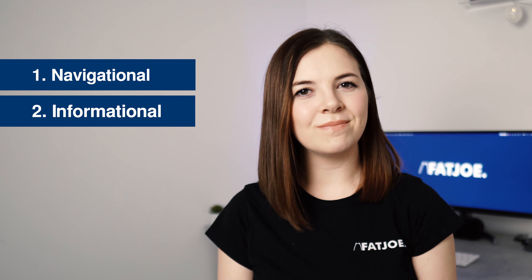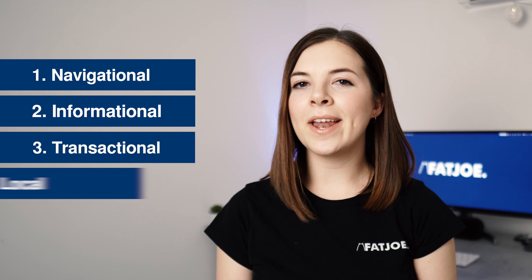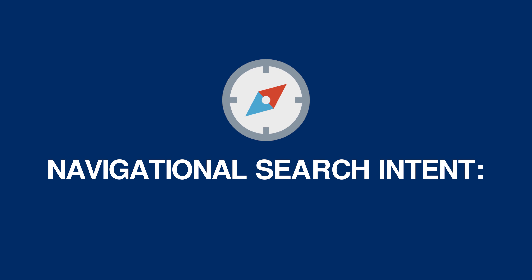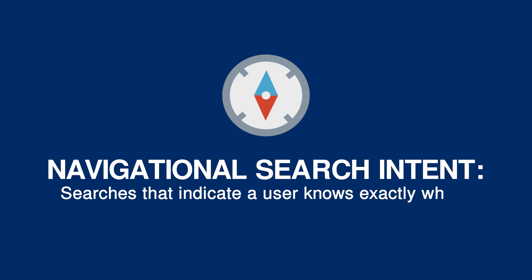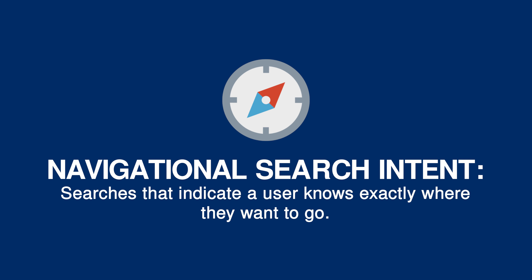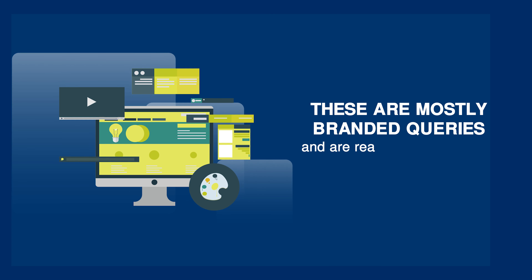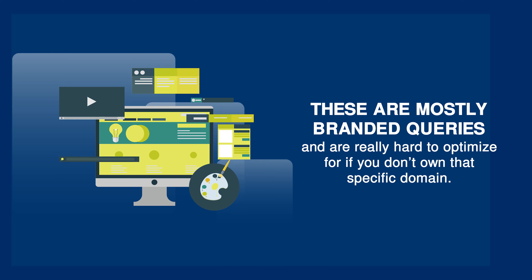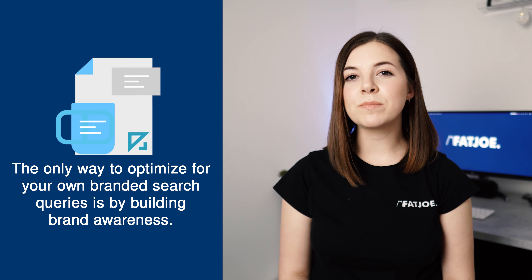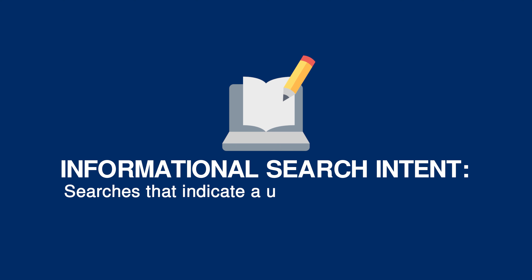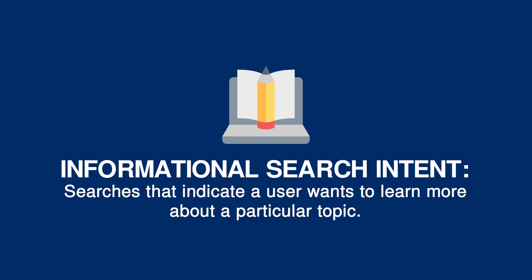There are three key things that make a good keyword: relevance, authority and search volume. The keywords that you've chosen from your keyword research need to serve a purpose by ensuring that you can create relevant and valuable information for your target audience. If your content is the best at meeting users' needs, then you will rank number one for that search query. You'll also need to prove to Google that you're an authority for that chosen subject or niche. Creating helpful in-depth content which appears all over your website will do this. Search volume is possibly the most obvious element — you want to make sure that people are actually searching for it.